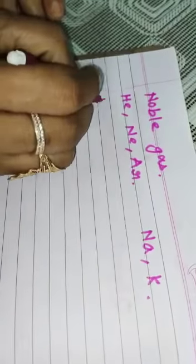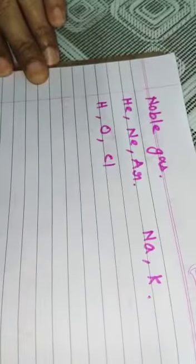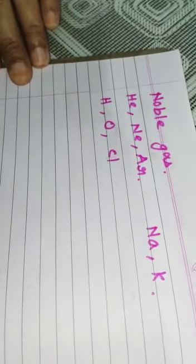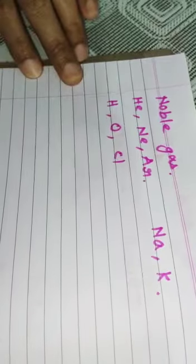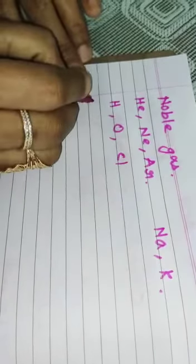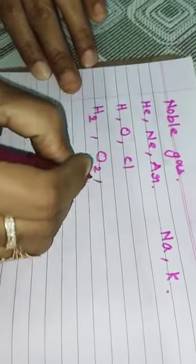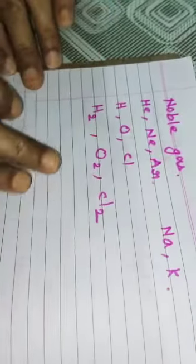But few atoms are there like hydrogen, oxygen, chlorine. They cannot exist in their atomic form. For that, they combine with other atoms to form H2, O2 and Cl2. Means they are existing in the diatomic form.